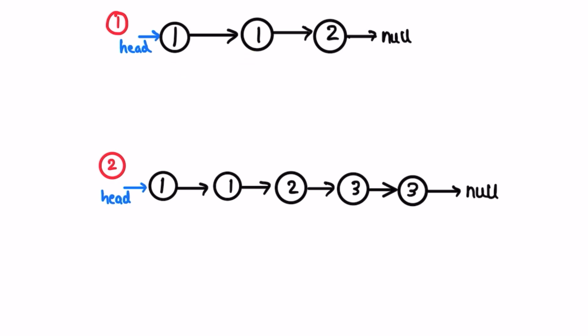For that, let's start off by creating a current node which will be pointing at the head of the linked list. This current node will iterate until current is not equal to null, meaning we reach the end of the linked list. We also have to check if current.next is not equal to null, because we're going to compare the current node with the next node. Until then we run a while loop.